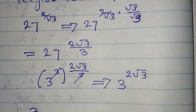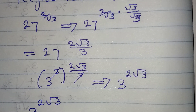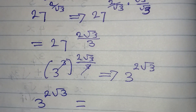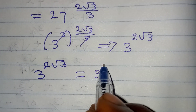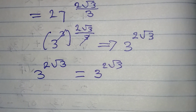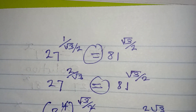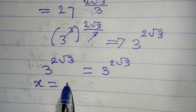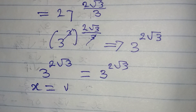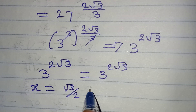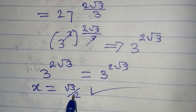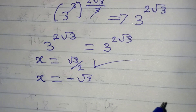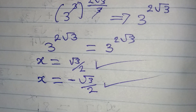Bringing both sides together: the left side gives 3 to the power of 2 root 3, and the right side also gives 3 to the power of 2 root 3. This confirms that x equals root 3 over 2 satisfies the original equation. Since this positive value works, the negative value x equals negative root 3 over 2 will also satisfy the equation.